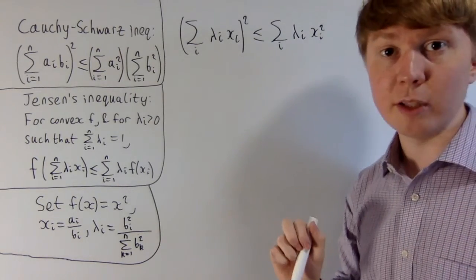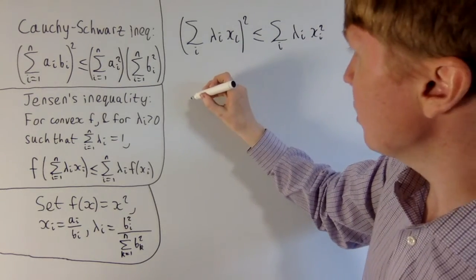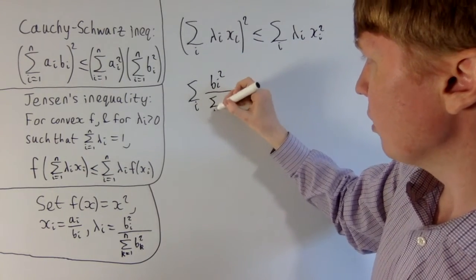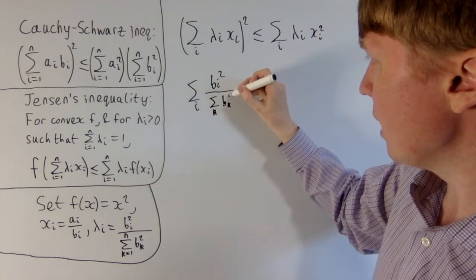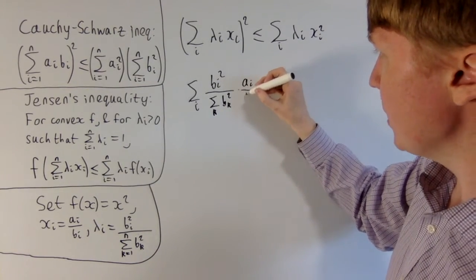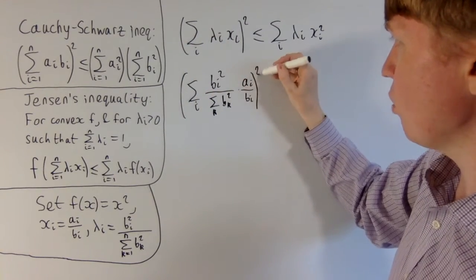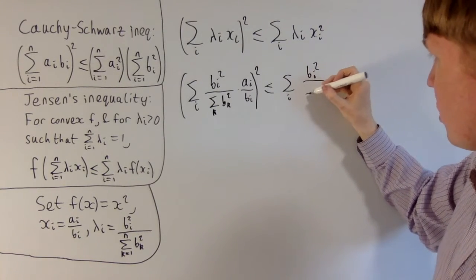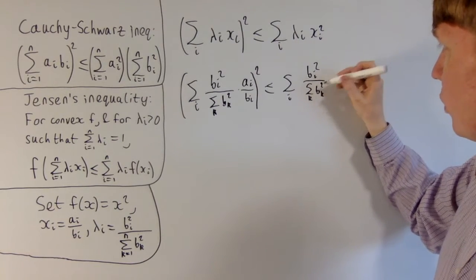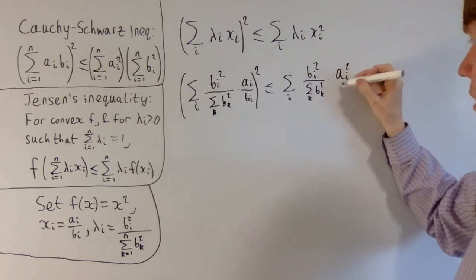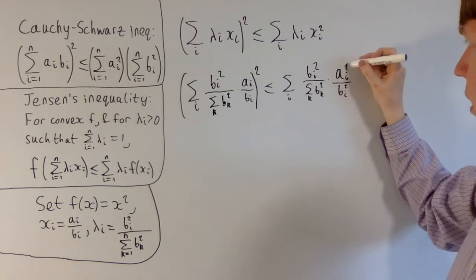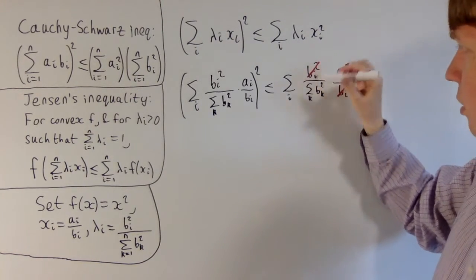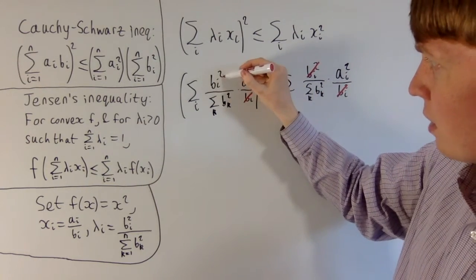Substituting in our values for λᵢ and xᵢ: on the left side, λᵢ = bᵢ²/(Σₖbₖ²) and xᵢ = aᵢ/bᵢ, so we get (Σᵢ [bᵢ²/(Σₖbₖ²)] · (aᵢ/bᵢ))² on the left. On the right we get Σᵢ [bᵢ²/(Σₖbₖ²)] · (aᵢ²/bᵢ²). We can see some cancellations: on the right the bᵢ² terms cancel, and on the left each bᵢ² cancels with one bᵢ, removing the square.